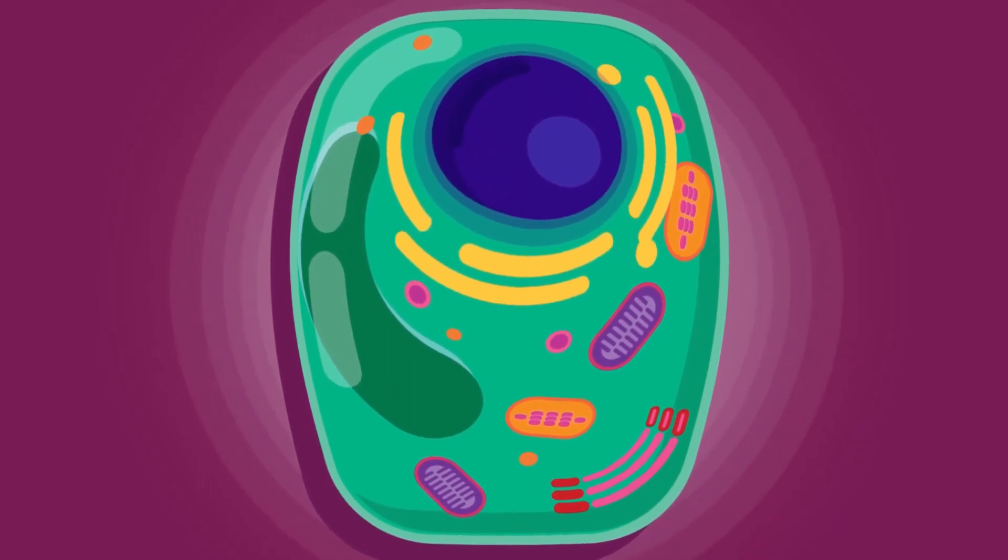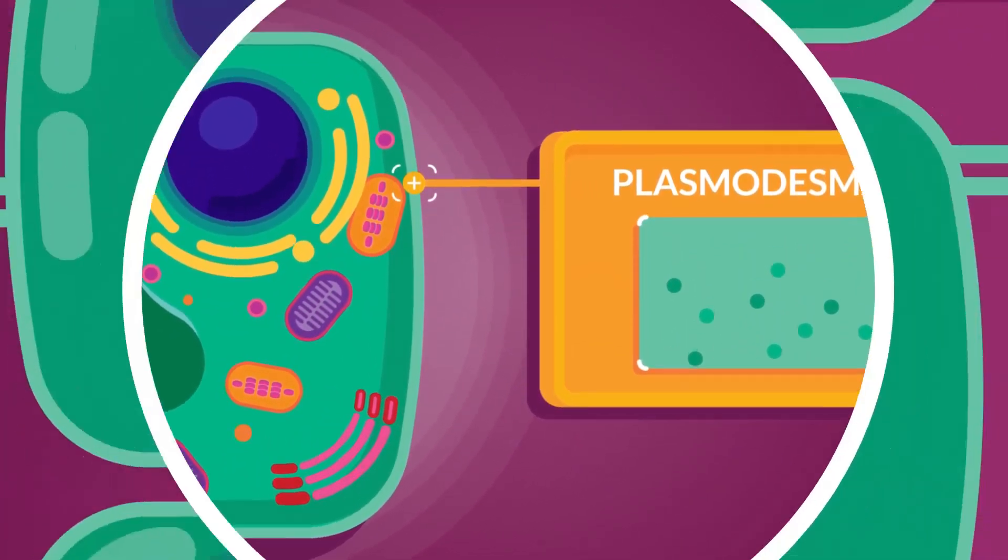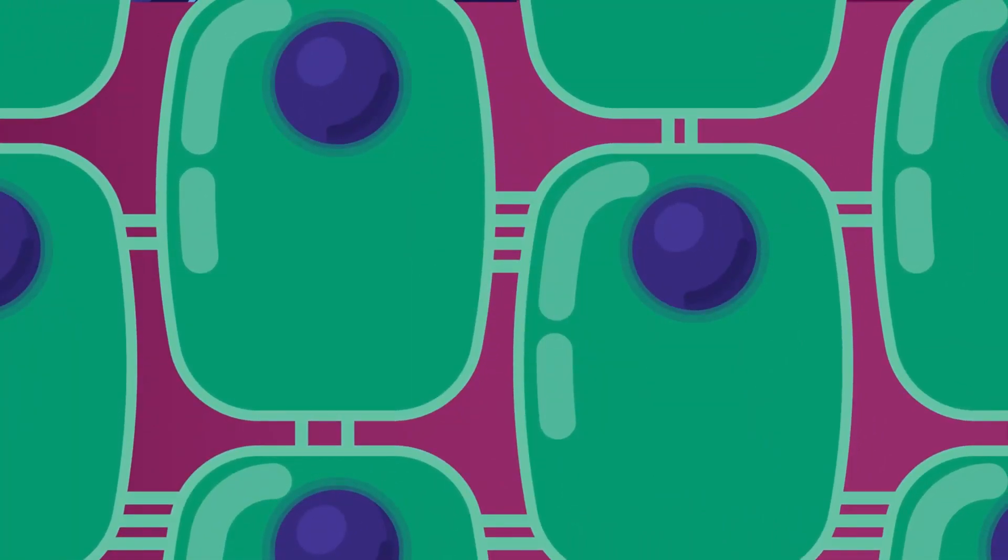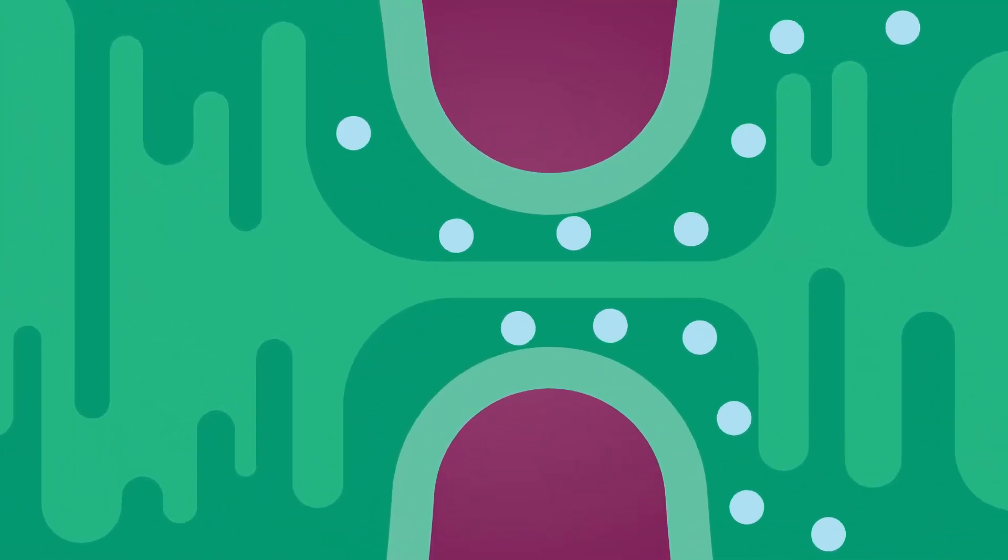Plant cells have another interesting structure, the plasmodesmata. The plasmodesmata is like a road connecting a neighborhood together. Substances send to neighboring cells with the help of cytoplasm, which passes through pore-like structures in the cell walls.